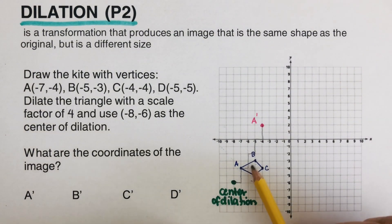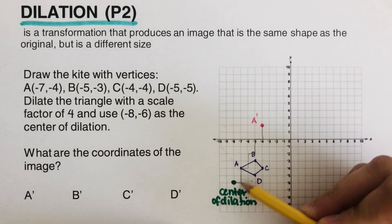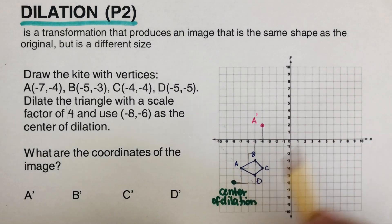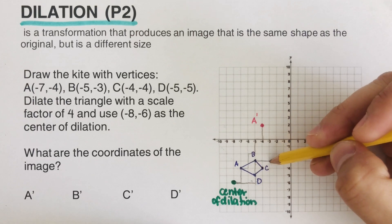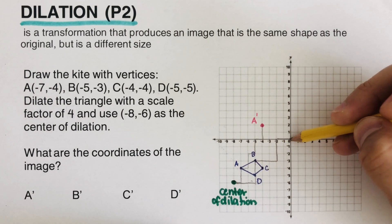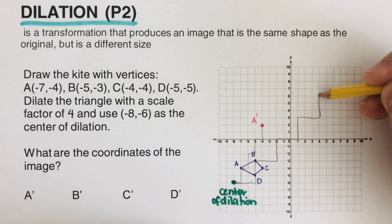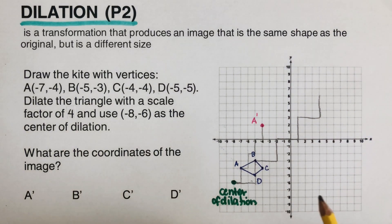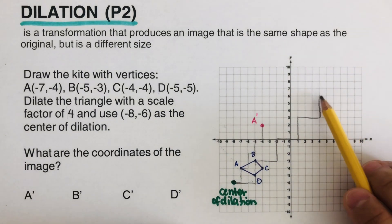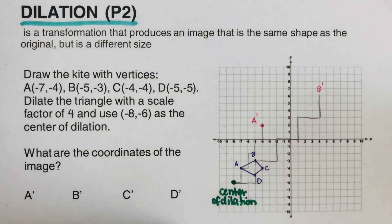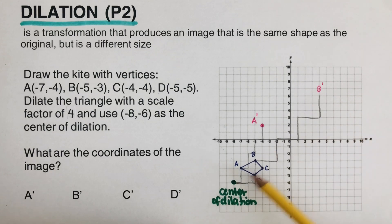We do the same for point B. B is three units from the center of dilation in a certain direction. We repeat that distance four times to get B prime. B prime is four times farther from the center of dilation than B, consistent with the scale factor of four.